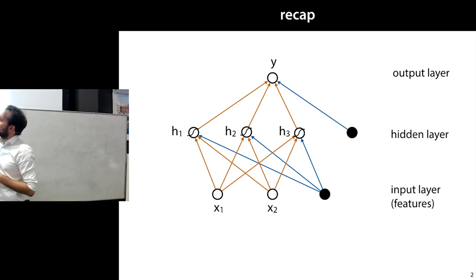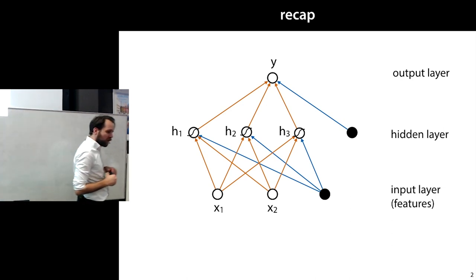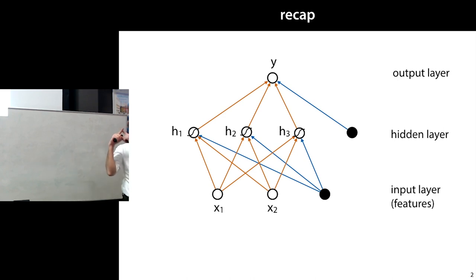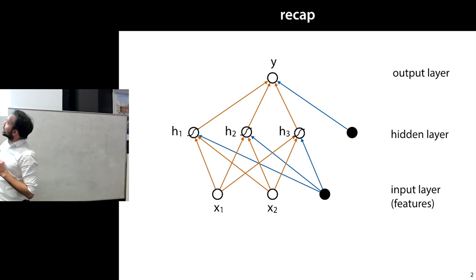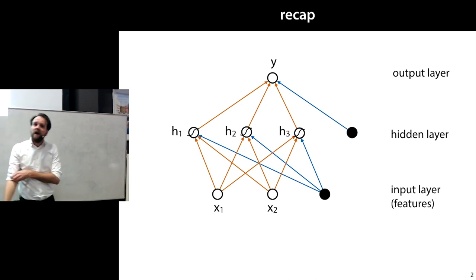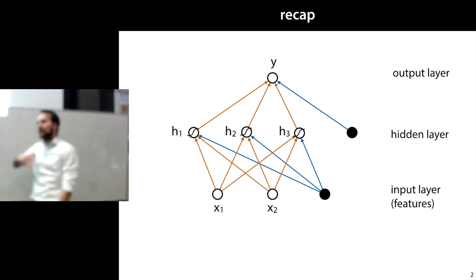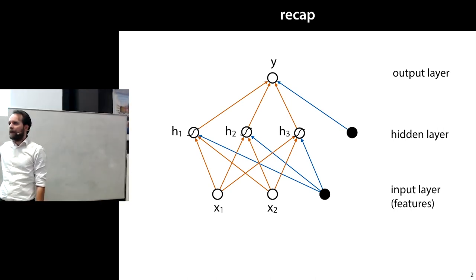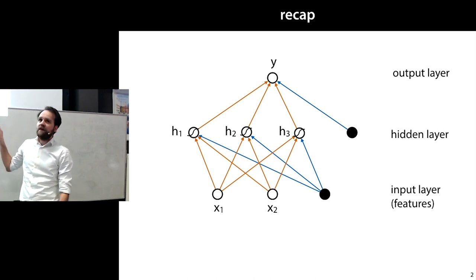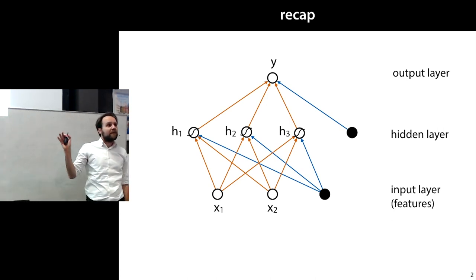This is where we left off. This is a neural network. The little circles represent numbers, and the arrows represent weights we apply to those numbers. By feeding data into the bottom of the network and feeding it forward, we end up with a value at the end. I'll do a very brief recap of the most important thing we talked about, which is the backpropagation algorithm.